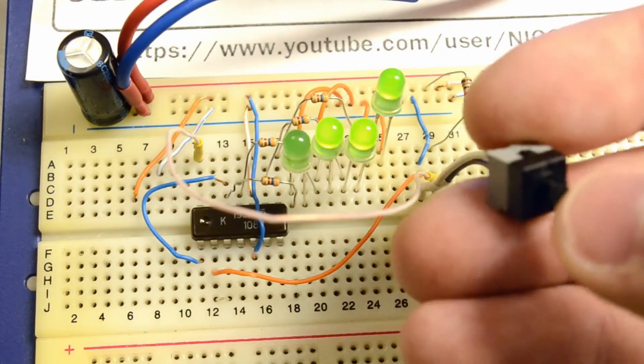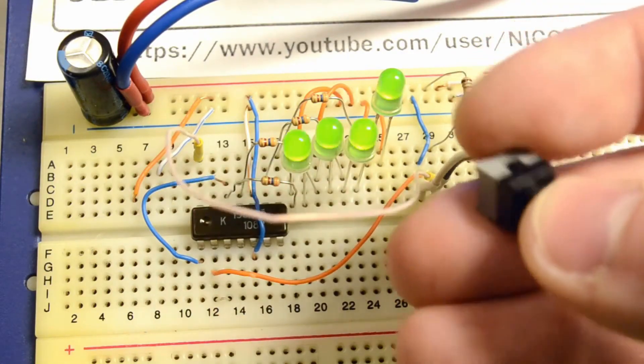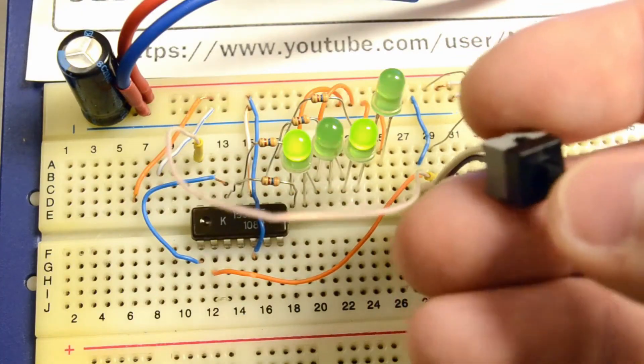Now let's look at methods to combat this issue. A fairly common method to eliminate the bounce is by connecting a capacitor in parallel with the button. And here we need to conduct an experiment.